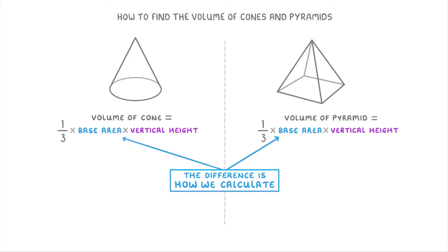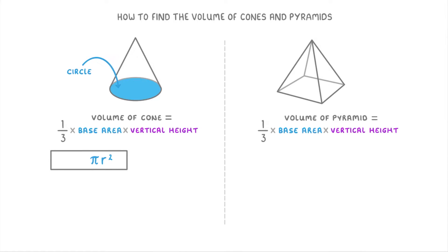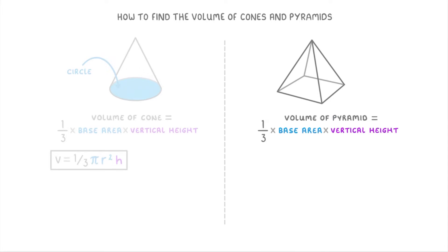The only difference between the two is how we calculate the base area. For example, the base of a cone is a circle, so the base area will just be the area of a circle, which we can find by doing πr². So the full formula for a cone would be V = (1/3)πr²h.